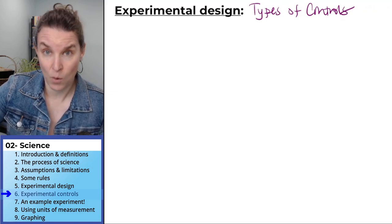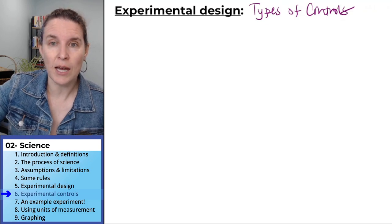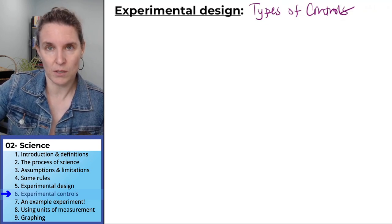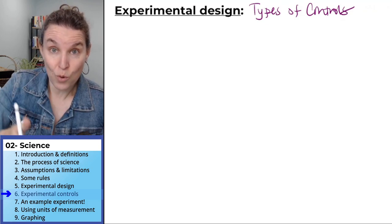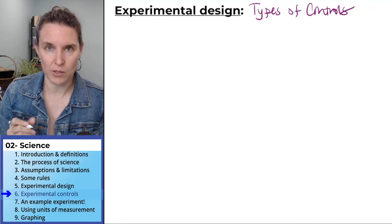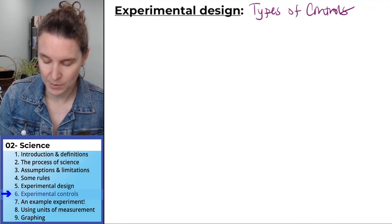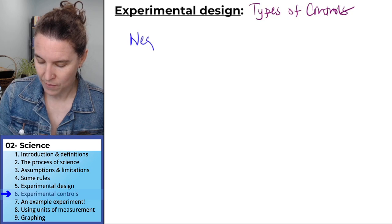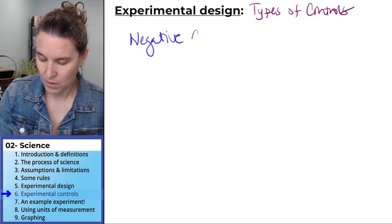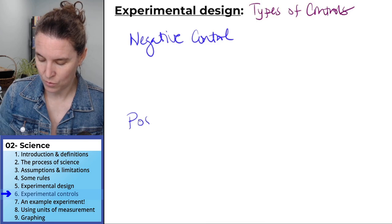Did they all die because they always all die? Did they all die because it was salty? The control gives you something to compare to. Now, two types of controls. We have a negative control and a positive control.